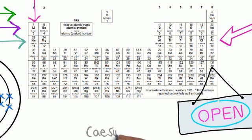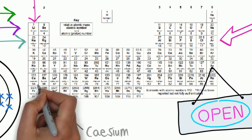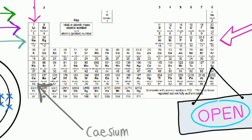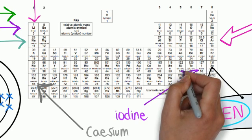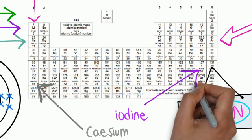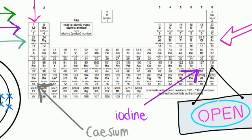Using this pattern, we can ascertain that caesium, with an atomic number of 55, is in period 6, group 1, so has 6 shells with 1 electron in its outer shell. Iodine, with an atomic number of 53, is in period 5, group 7, so has 5 shells and 7 electrons in its outer shell.